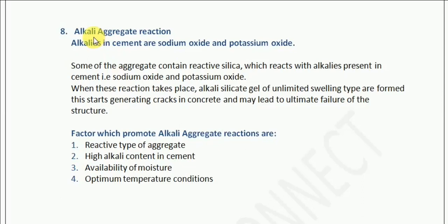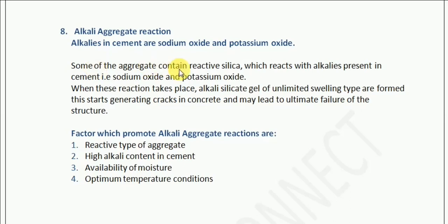Let us understand alkali aggregate reaction. This is one of the topics which is very important to ensure the desired strength of a structure. The alkalis in cement are sodium oxide and potassium oxide. This is a concept we have also seen during the understanding of the manufacturing of cement process. The aggregate contains reactive silica.